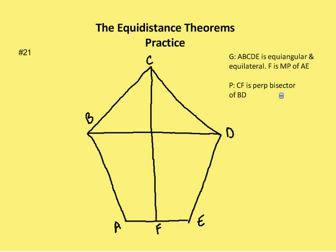I'm going to mark up the diagram first. The figure ABCDE is equiangular and equilateral, so BC is congruent to CD, congruent to DE, congruent to AE, congruent to BA. It's also equiangular, so all the angles are congruent, including angle CBA.